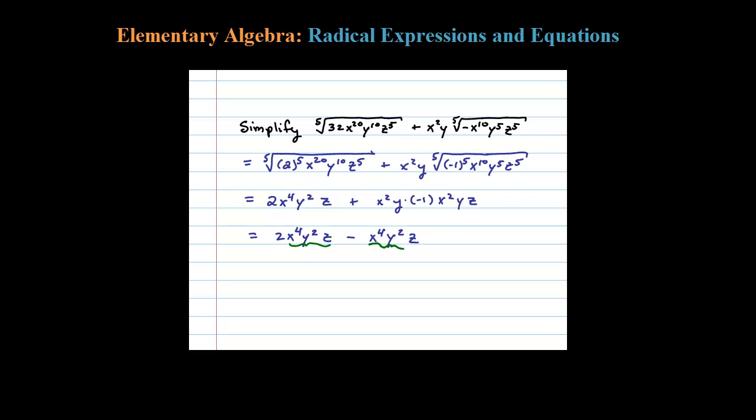You've got X to the fourth Y squared Z, and here the coefficient is 1. So those are like terms. 2 minus 1 is 1, giving us X to the fourth Y squared Z.